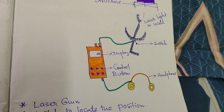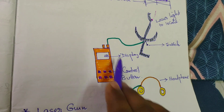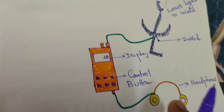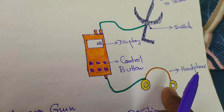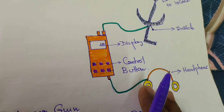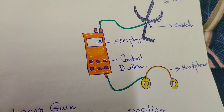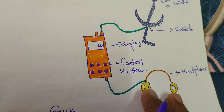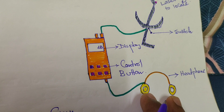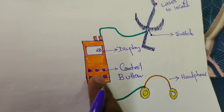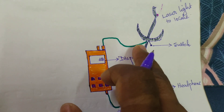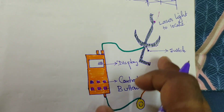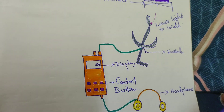In the partial discharge measurement test, three types of kit components are there. First is this handy machine — you hold this machine in your left hand. This is the headphone — you wear this headphone on your ear to hear the audible magnitudes of the noises, whatever partial discharge is happening to the equipment. These are the control buttons, this is the display, and this is the laser beam gun with an antenna-like structure — this is the holding point and this is the switch.